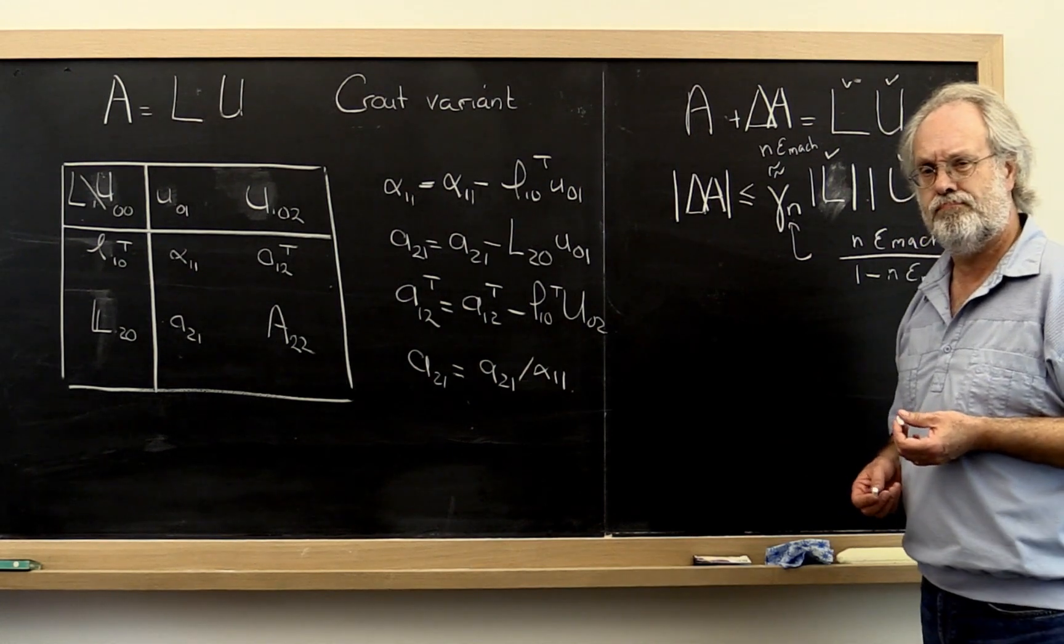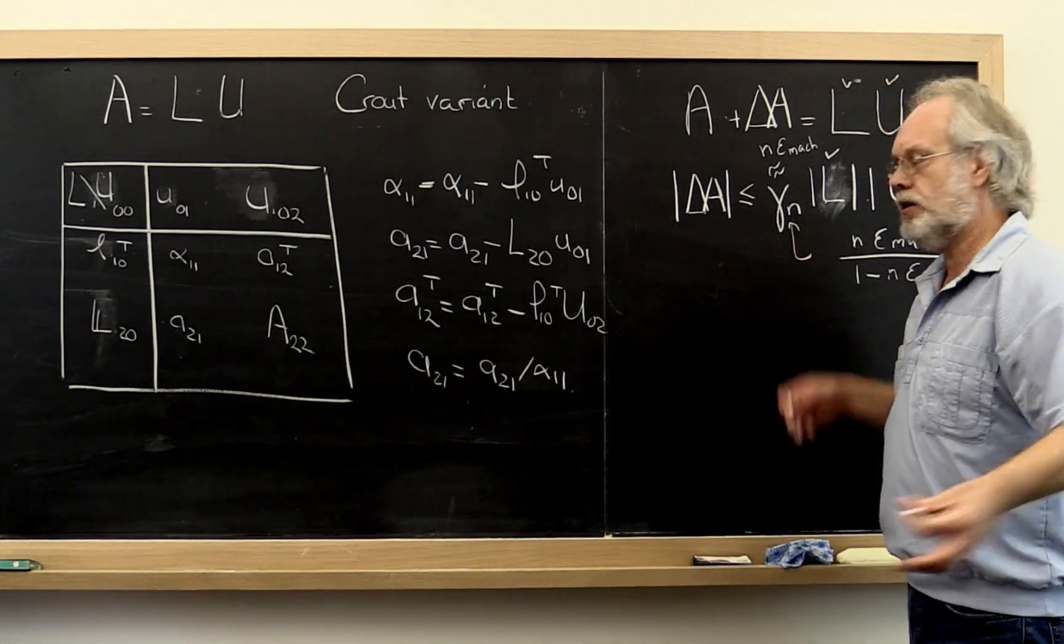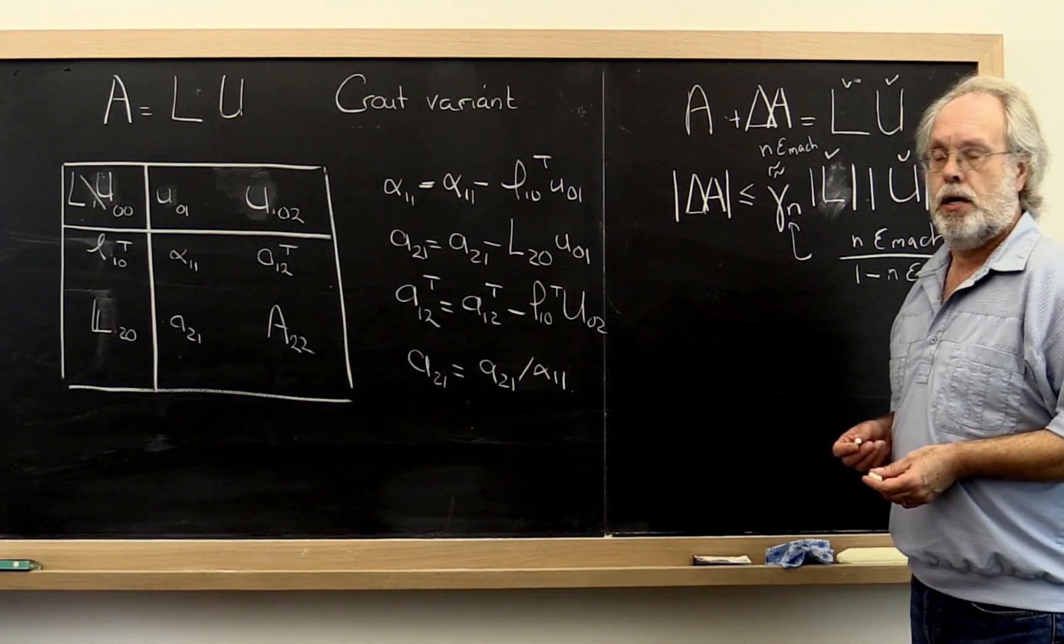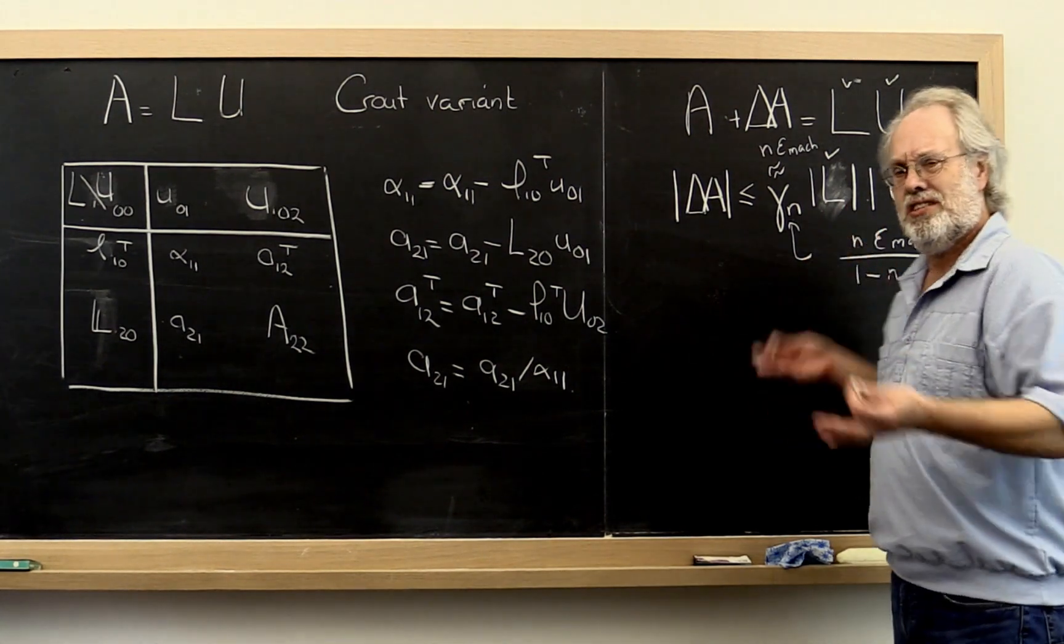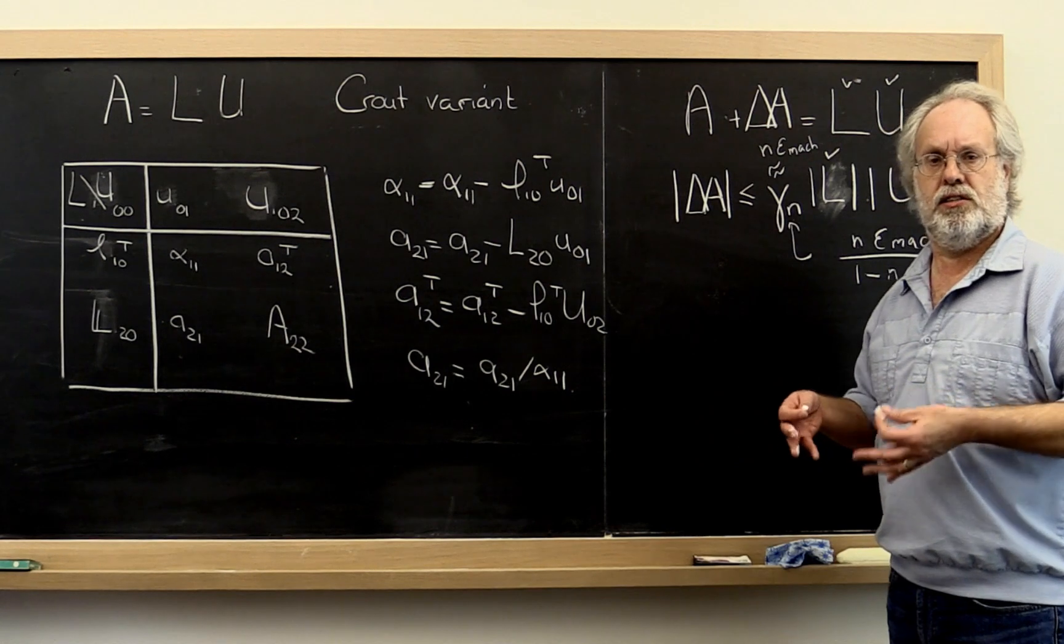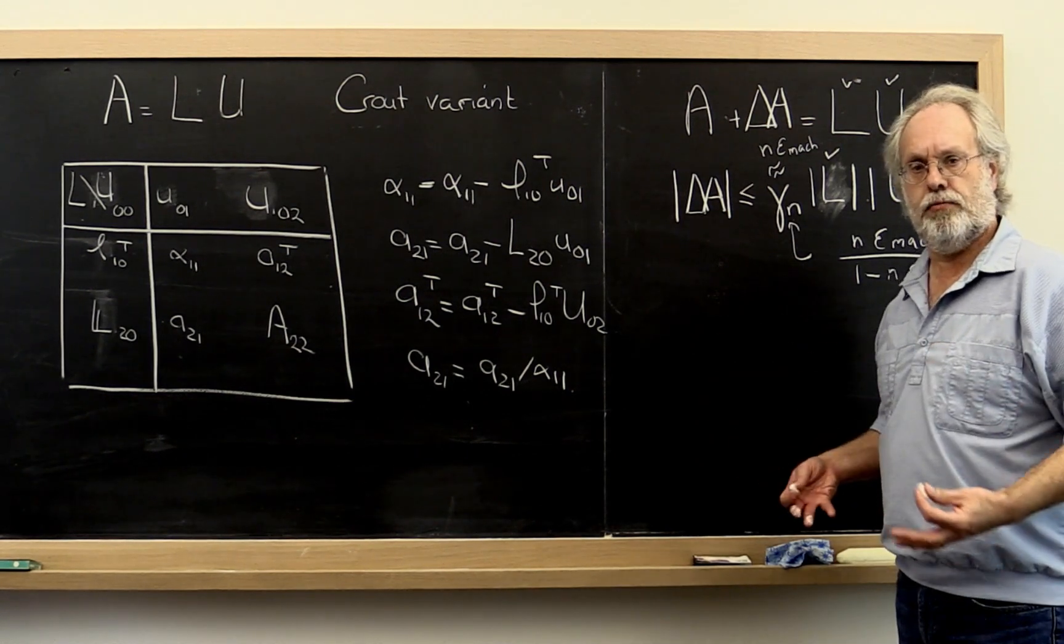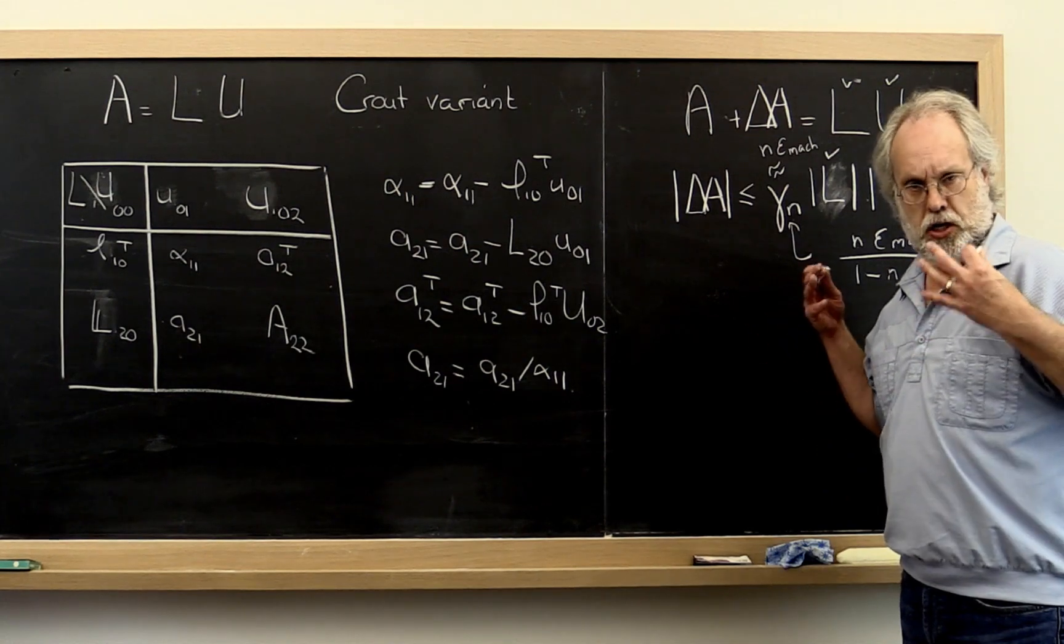So as systems become larger, accumulation could actually become a problem. But of course this is a worst case scenario. This is the pessimistic view where every time you have round-off it always goes against you.